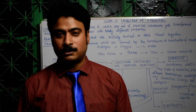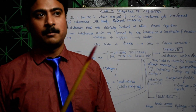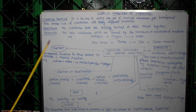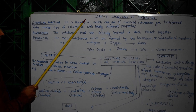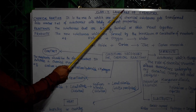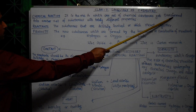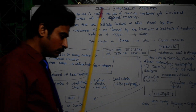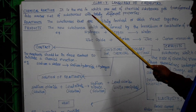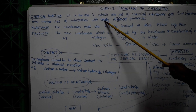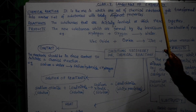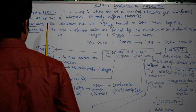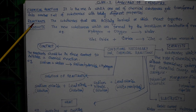Dear students, today we will discuss about chemical reactions — various chemical changes that occur in our everyday life around us. A chemical reaction is one in which one set of chemical substances gets transformed into another set of substances with totally different properties.